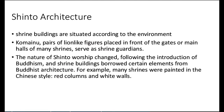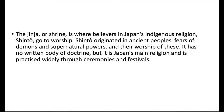Shinto structures: shrine buildings are situated according to the environment. Komainu — pairs of lion-like figures placed in front of the gates or main halls of many shrines — serve as shrine guardians. The nature of Shinto worship changed following the introduction of Buddhism, and shrine buildings borrowed certain elements from Buddhist architecture, such as being painted in Chinese style with red columns and white walls. The Jinja or shrine is where believers in Japan's indigenous religion, Shinto, go to worship. Shintoism originated in ancient peoples' fears of demons and supernatural powers, and has no written body of doctrine but is practiced widely through ceremony and festivals.